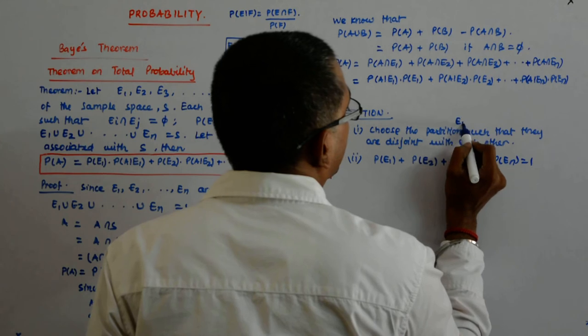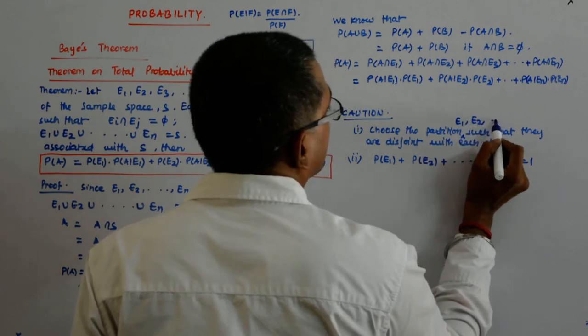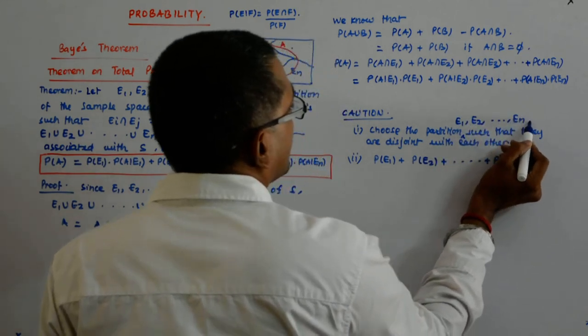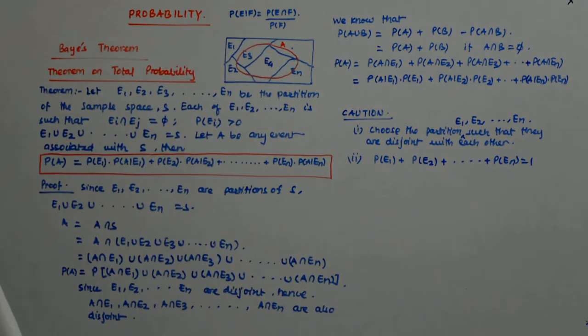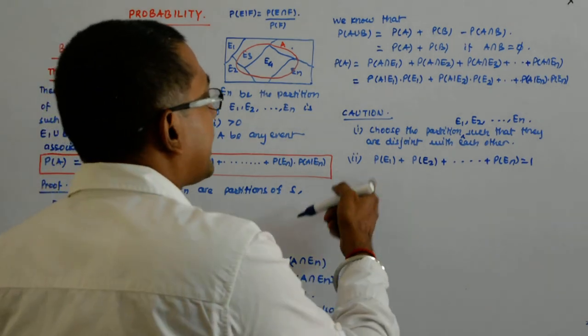Partitions are this - E1, E2 are partitions. Because this will become extremely critical when we are doing the Bayes theorem. When we do Bayes, this will become very important.